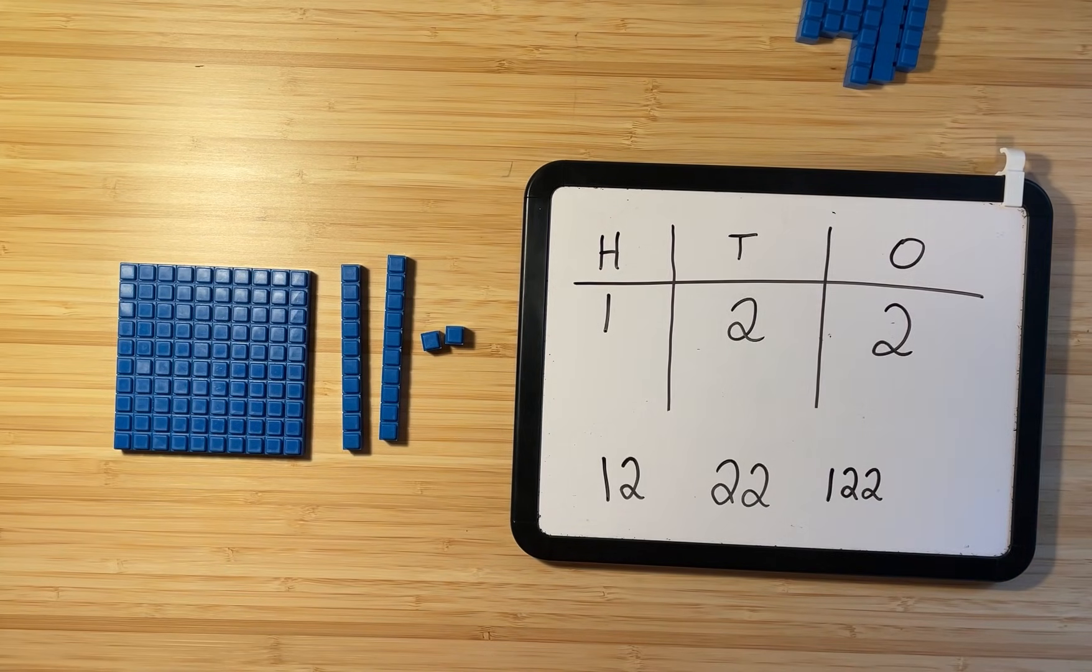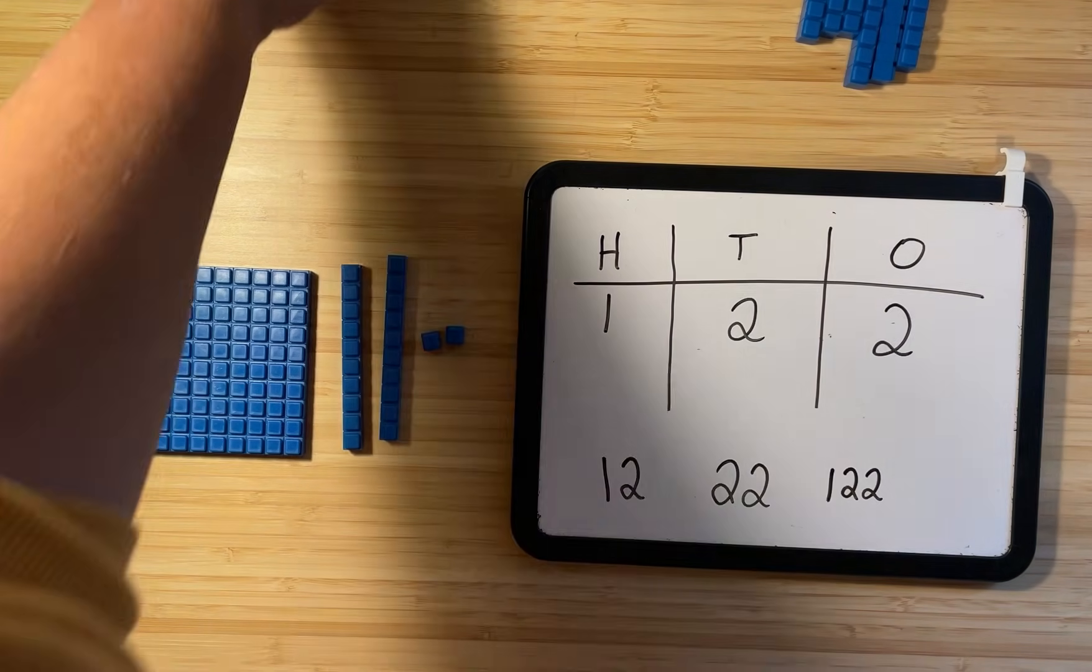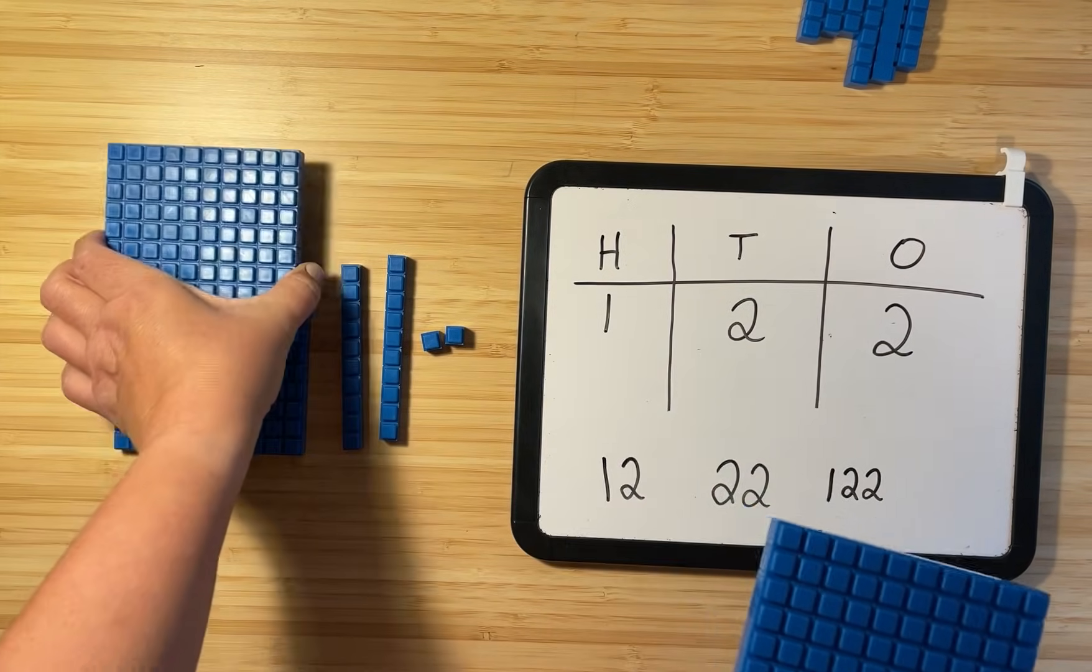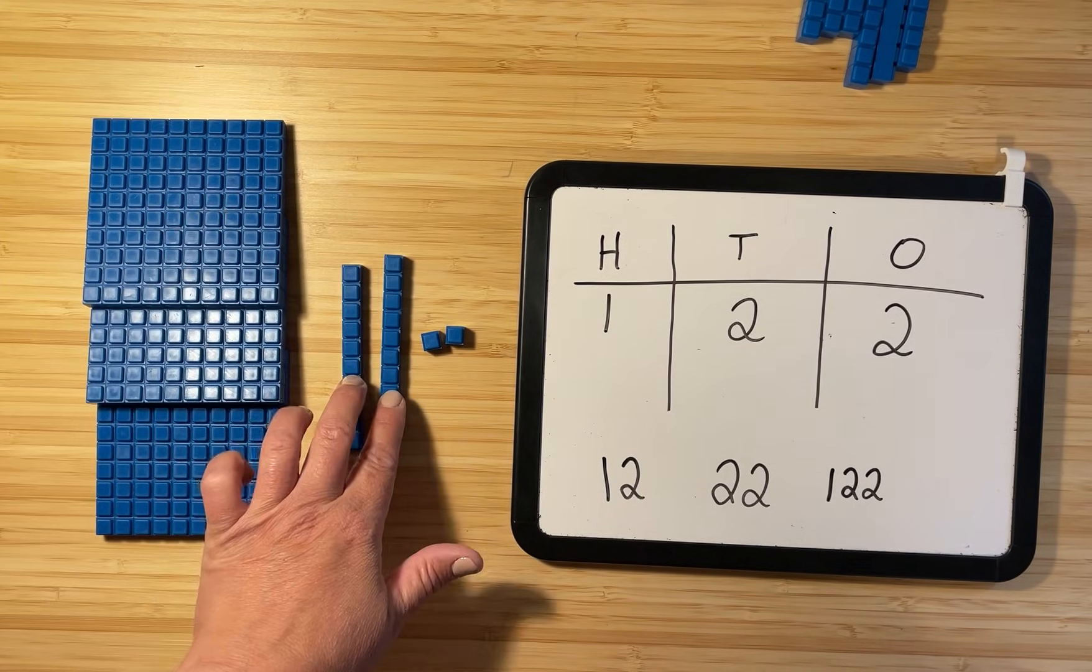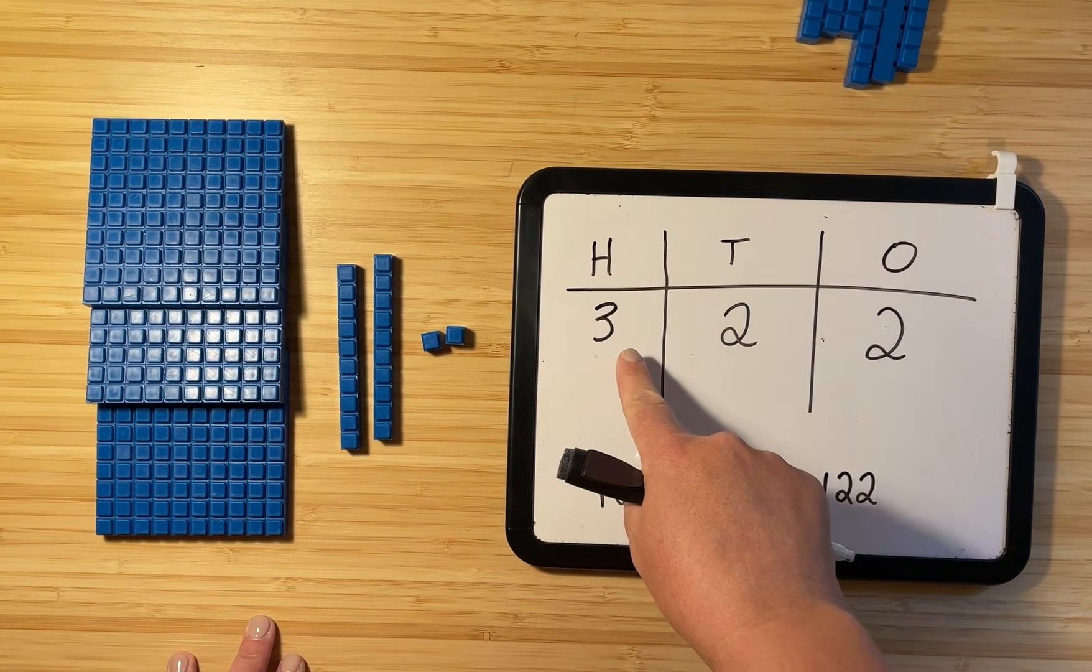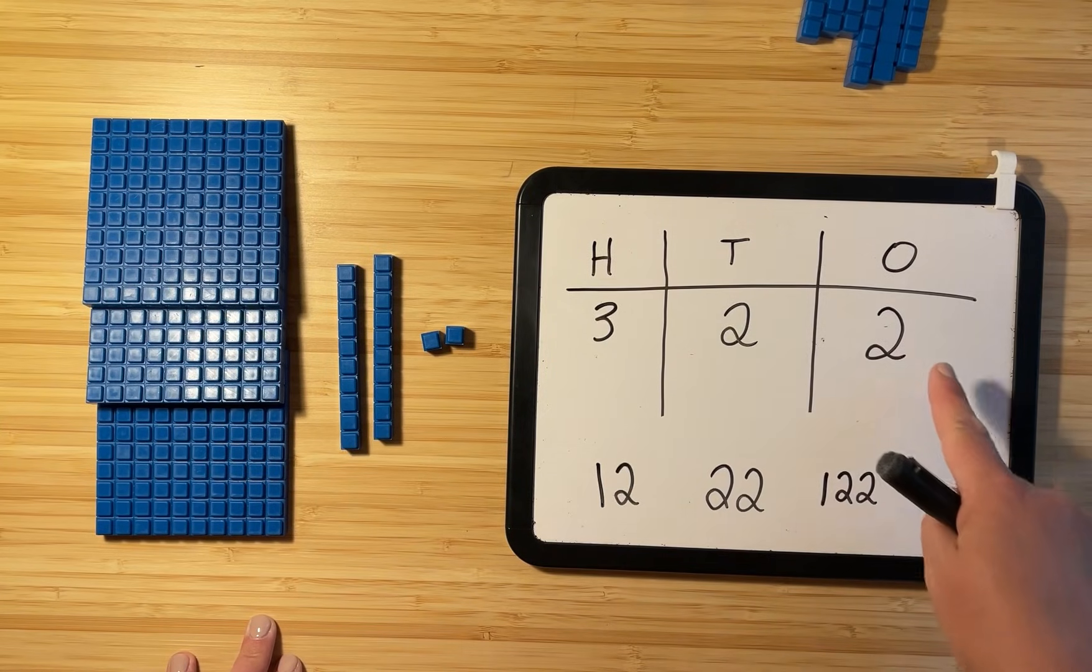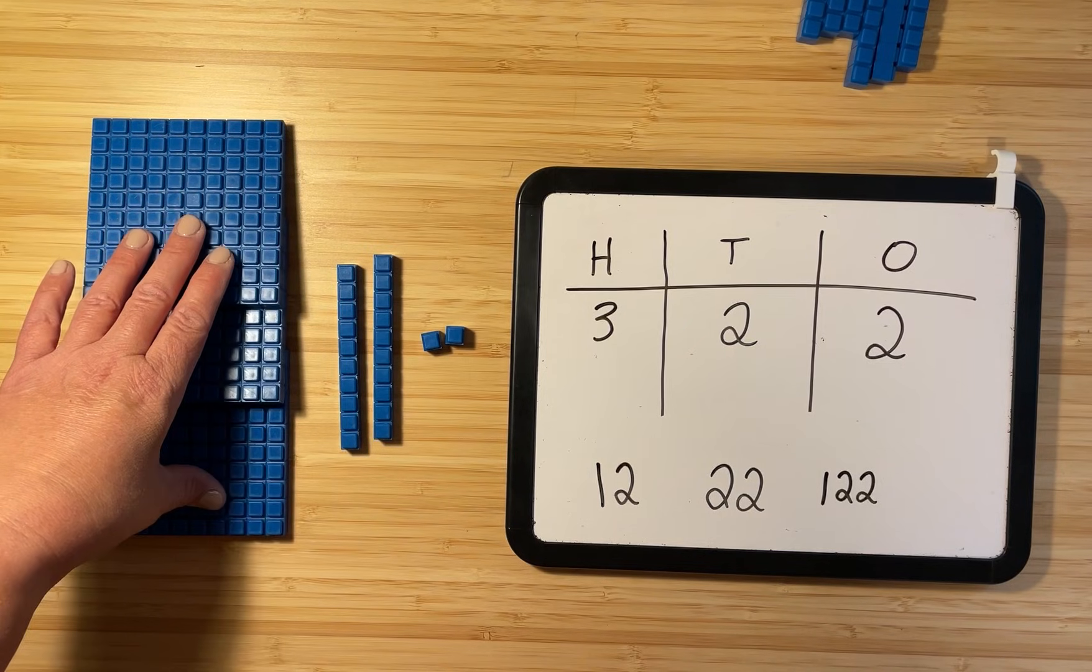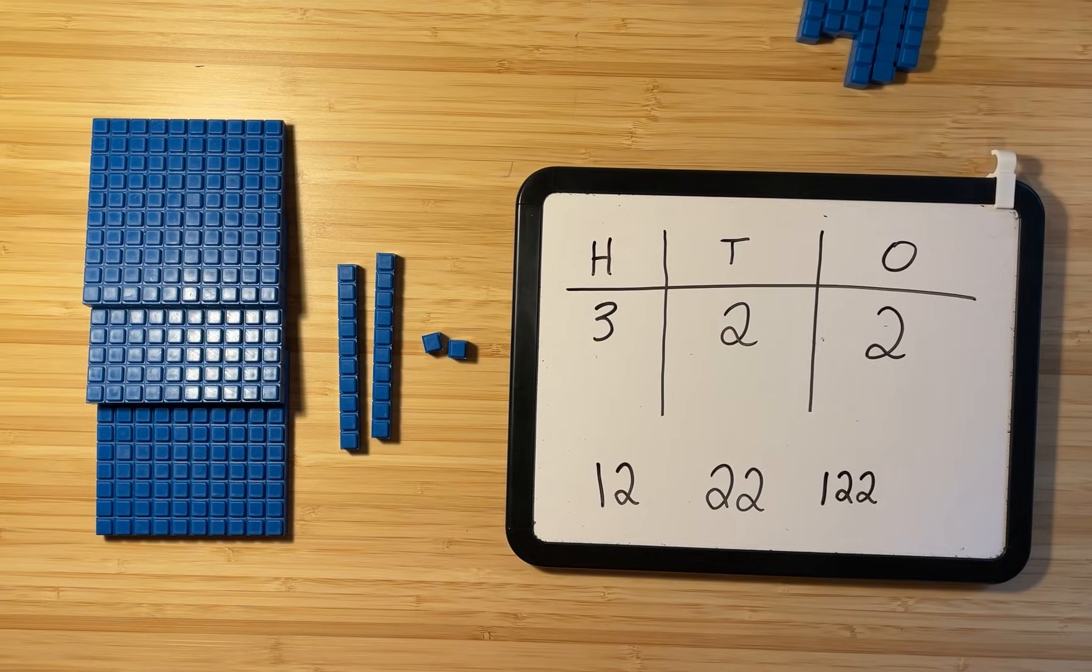You're back. I wish I could see in real life what you added to your number. I'm just going to do one example for you. I'm actually going to add two more hundreds to my number. So now I have three hundreds, two tens, and two ones. So the way that that changes my number is like this. Now I have three groups of 100. I have two groups of 10. And I have two ones. So I have 322.